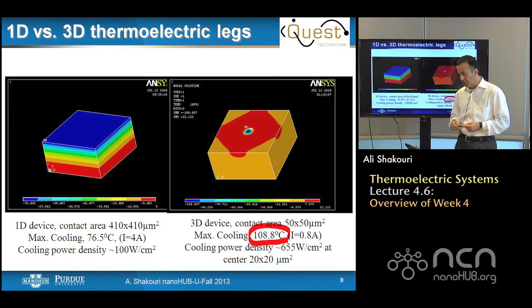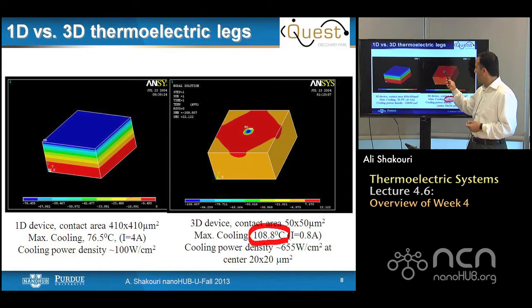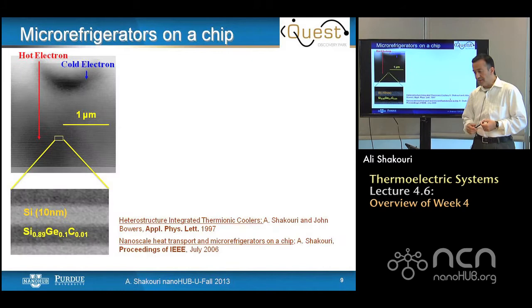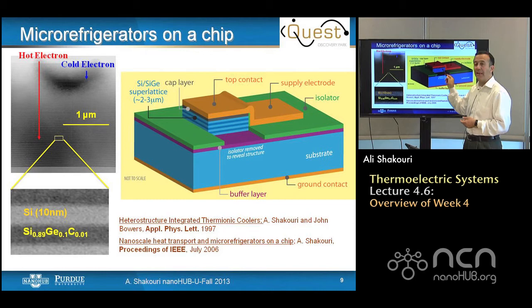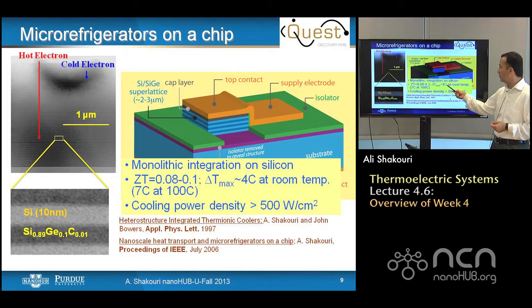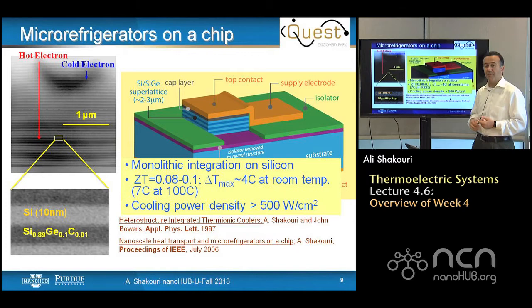If instead of bismuth telluride you use silicon, the maximum cooling you can get is about 1 to 1.5 degrees. One thing we discussed is the possibility to integrate a superlattice or a micro-refrigerator on a chip. On top of silicon, you can grow 3-micron-thick layers of silicon and silicon germanium carbon, and by sending a current you can make single-leg micro-coolers. There is Peltier cooling in the substrate — which is only about 1 degree — but by adding this tiny 3-micron layer, you can increase the cooling to about 7 degrees Celsius at 100-degree ambient temperature, with cooling power densities of more than 500 watts per centimeter squared.